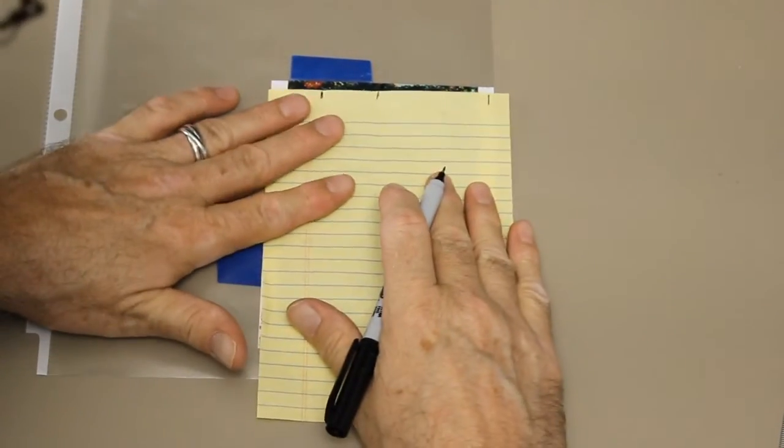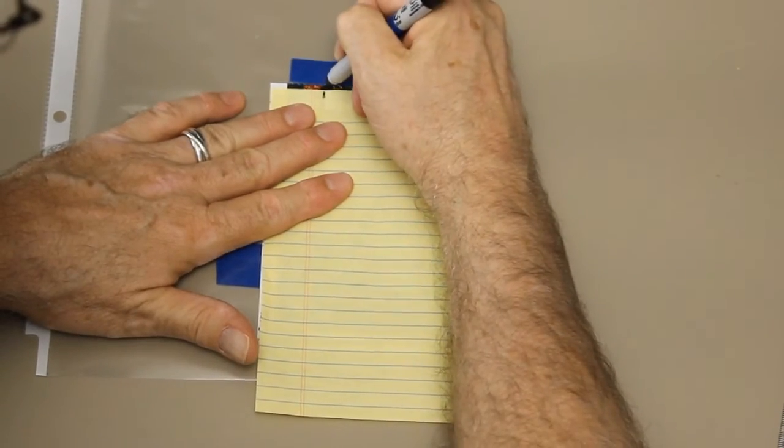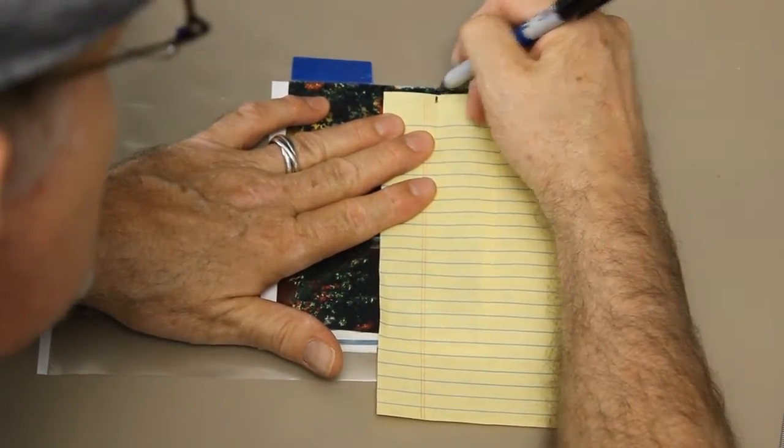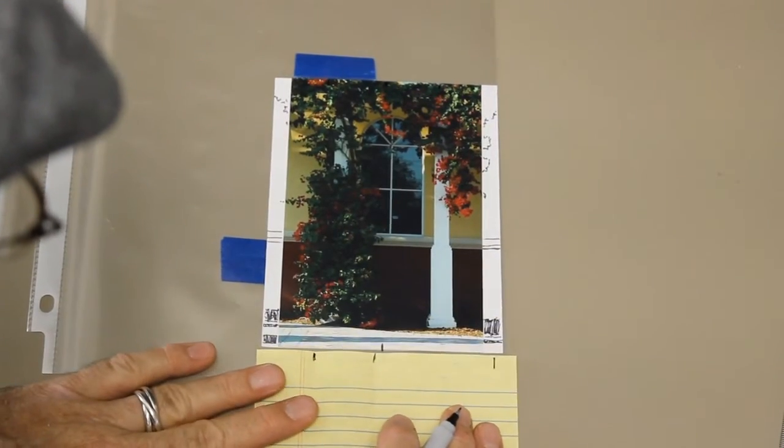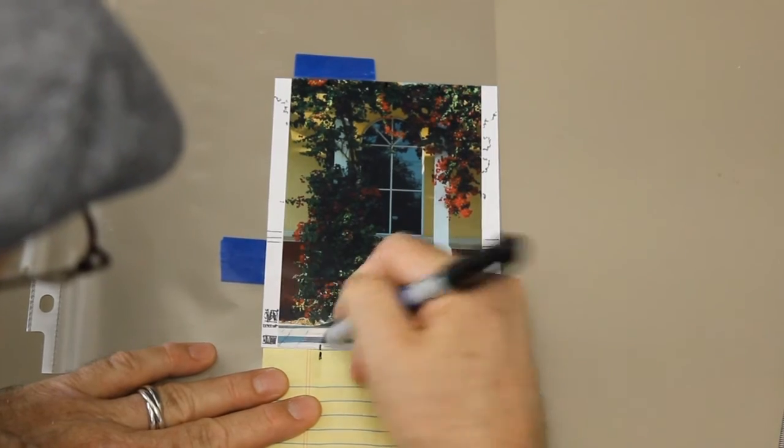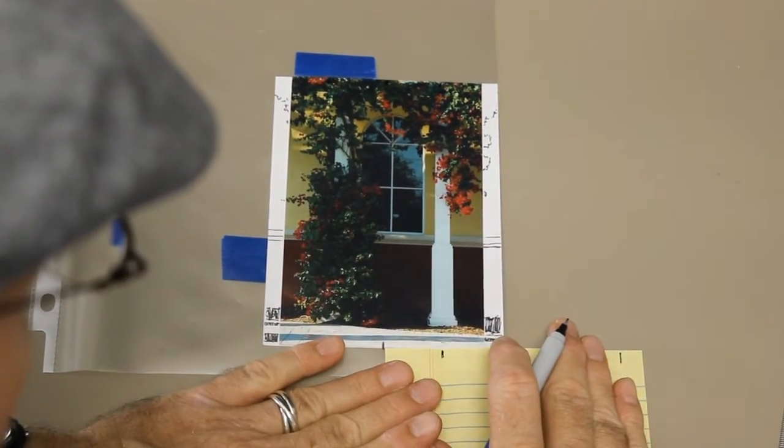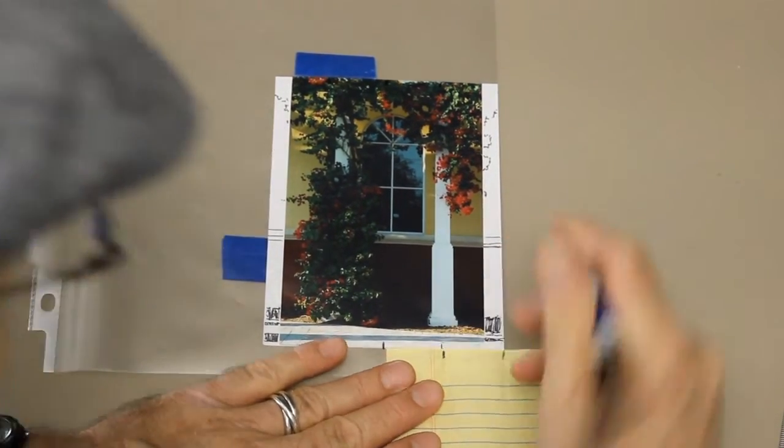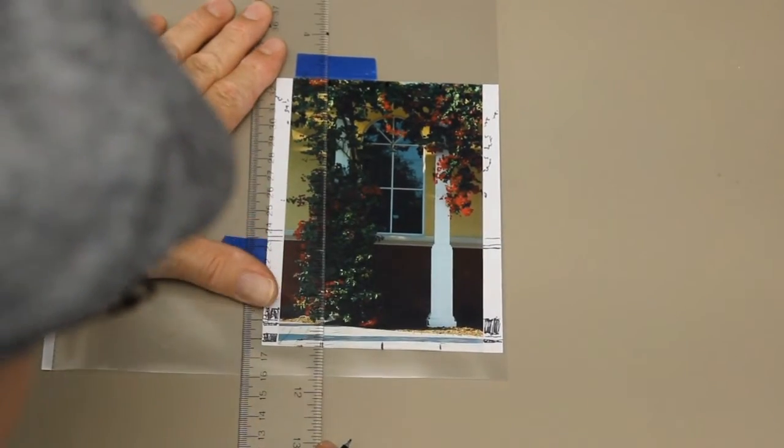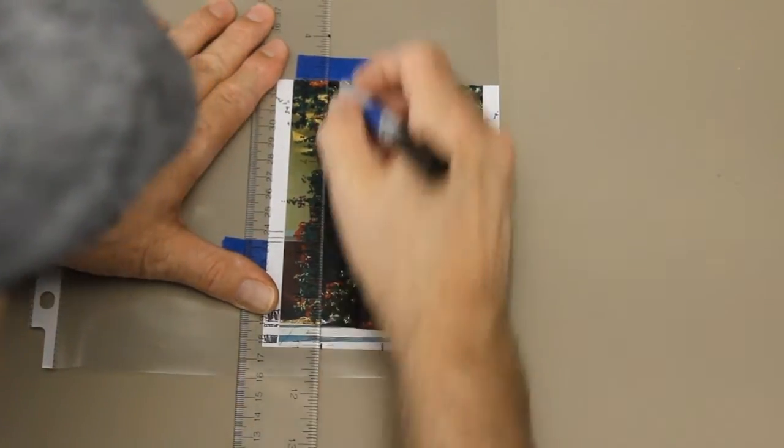Now I'll mark these up here and down here. I'm going to draw a line with my Sharpie marker between the marks I've just made.